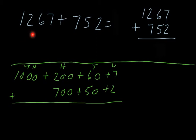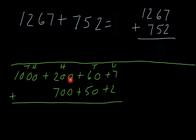In this next part we're going to look at 1267 plus 752. As mentioned, you can write it horizontally or vertically — I'll use the vertical one to check my work. One thing I forgot to point out in the previous question: when writing everything down, you should identify the units column, the tens column, the hundreds column, and the thousands column.